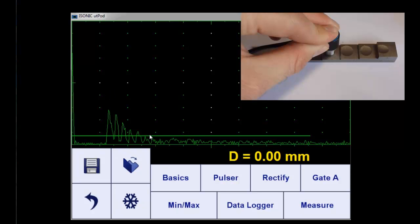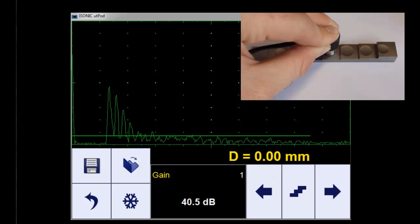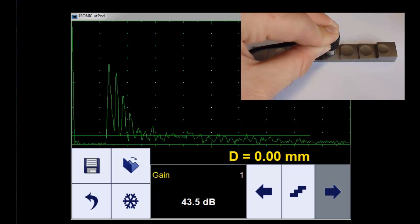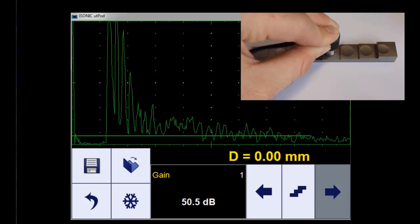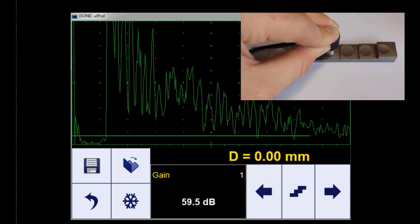In the next step we need to adjust the gain. We go to the basic menu, go to gain, and increase the gain. We make the gain quite high because we are looking to do measurements from zero to the first echo only. So we do flank measurement in this area.